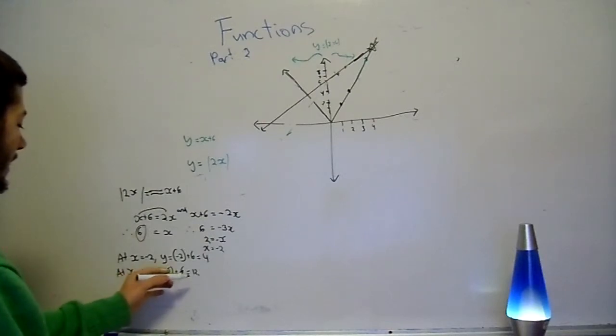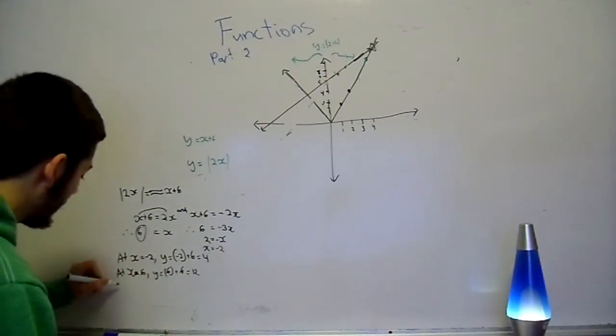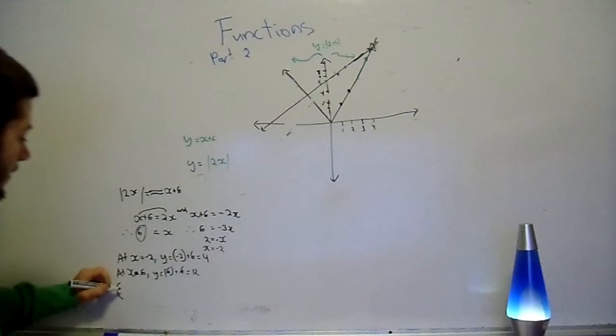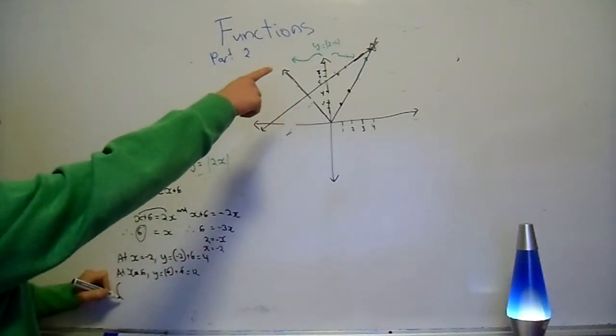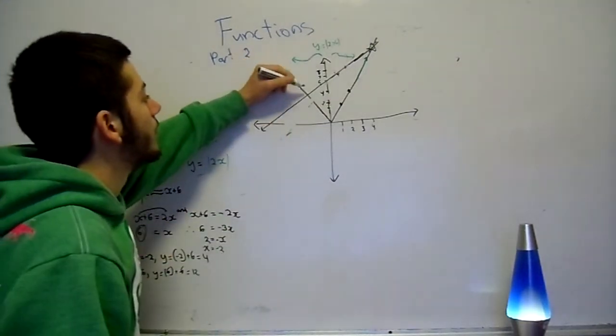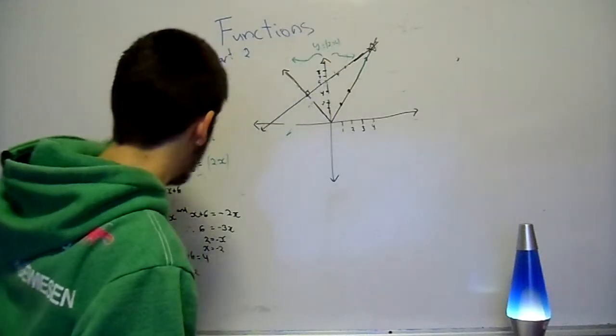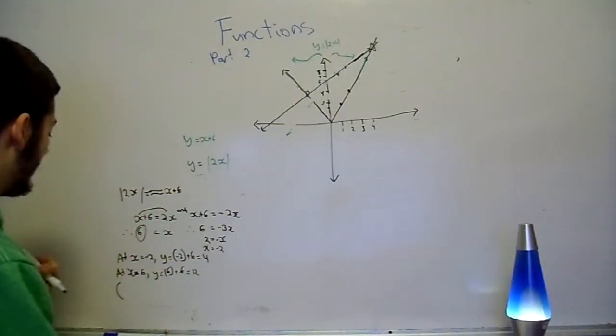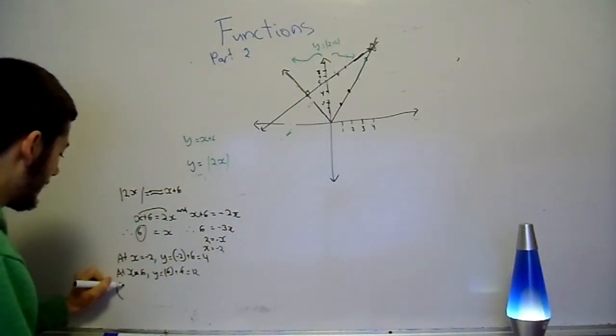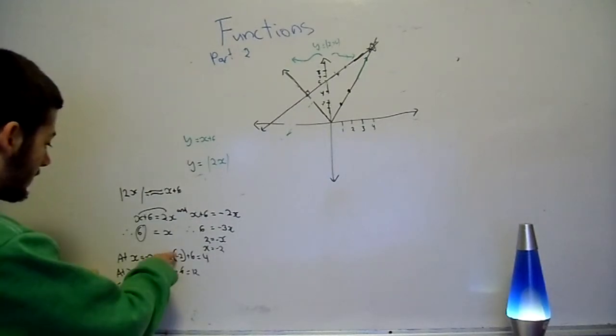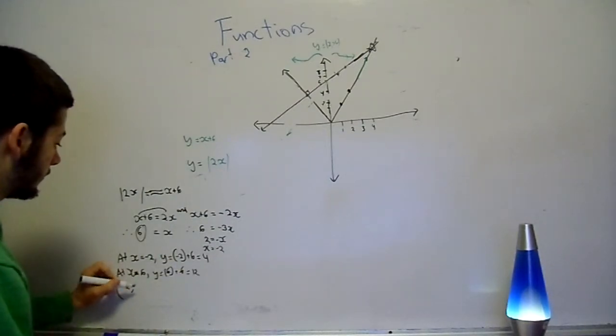Okay? So now we've got our x values and our y values. So, we can just put this out in coordinates. So, the point where it will intersect will be these points. And that is represented by minus 2, this one, comma, 4.